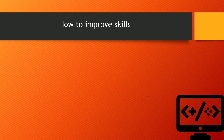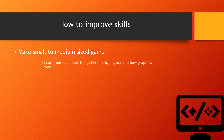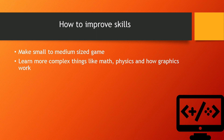Now for the second part: how to improve your skills. The first thing, as we already said, is to make small to medium-sized games. Then learn more complex things like math, physics, and how graphics work — this is very important if you want to improve the gameplay and make more custom things without using the built-in features of the engine, like making your own physics or better math calculations with better performance.